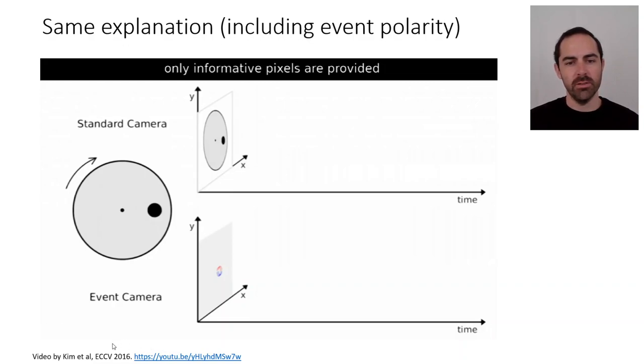This is again another animation of the same scene by a paper from 2016. And what differs from the other animation is perhaps that they are including event polarity with this red and blue colors.